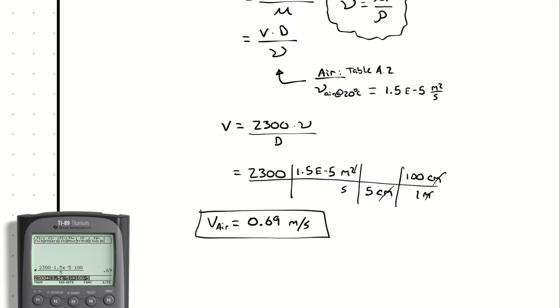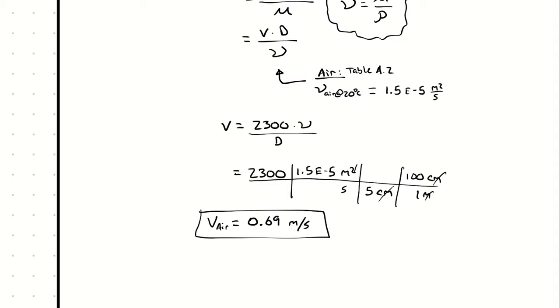So for air flowing through a 5 centimeter diameter pipe, anything slower than 0.69 meters per second on average, we will call laminar flow. Any velocity higher than 0.69 meters per second, we will call turbulent flow.